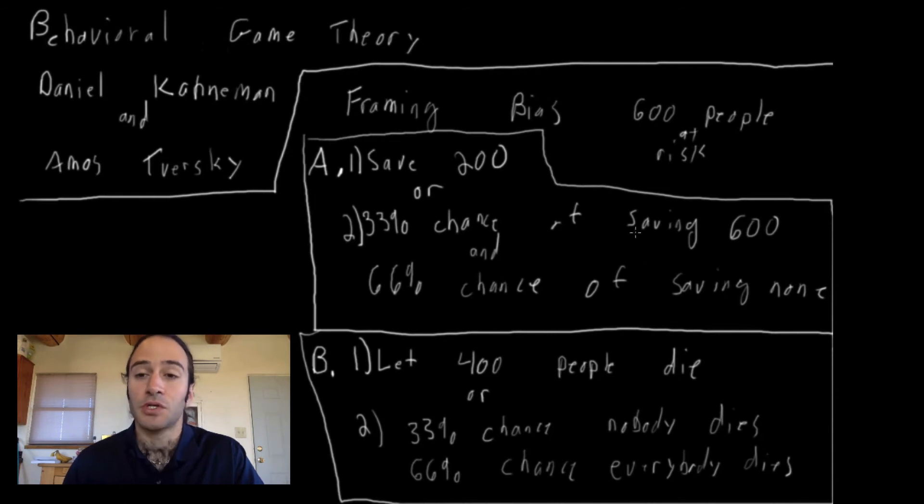So if we look closely at this decision problem, quantitatively, the options are exactly the same. If there's 600 total people, saving 200 is the exact same as having 400 people die. And this gamble here, as we call it, is exactly the same as this gamble. 33% chance of saving 600 is the same thing as saying 33% chance that nobody dies.